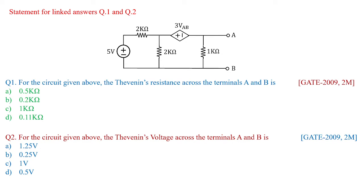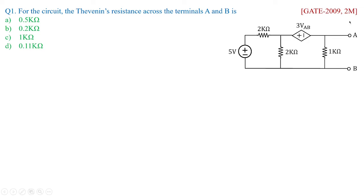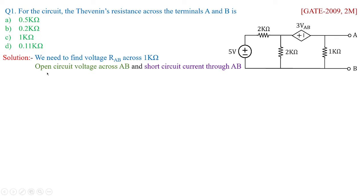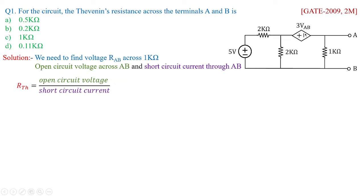How to solve this particular problem? Let us go with the first approach — finding out the Thevenin's resistance across terminals A and B. We need to find the open circuit voltage across A, B and the short circuit current through A, B. From this we get R_Thevenin equal to open circuit voltage divided by short circuit current. This approach is especially employed when dependent sources are given along with independent sources.